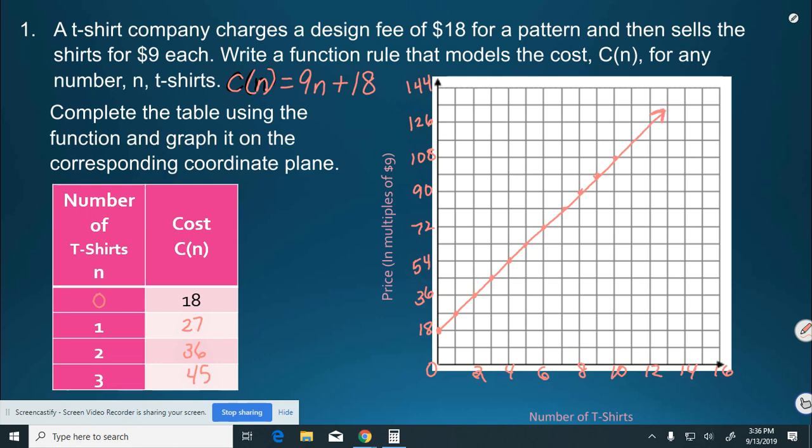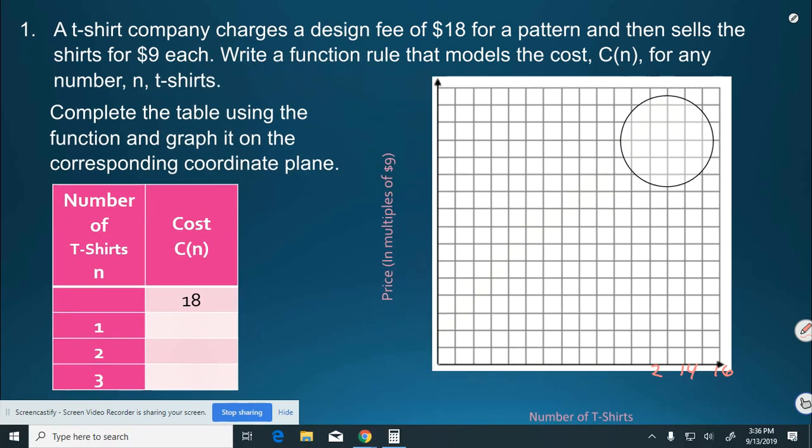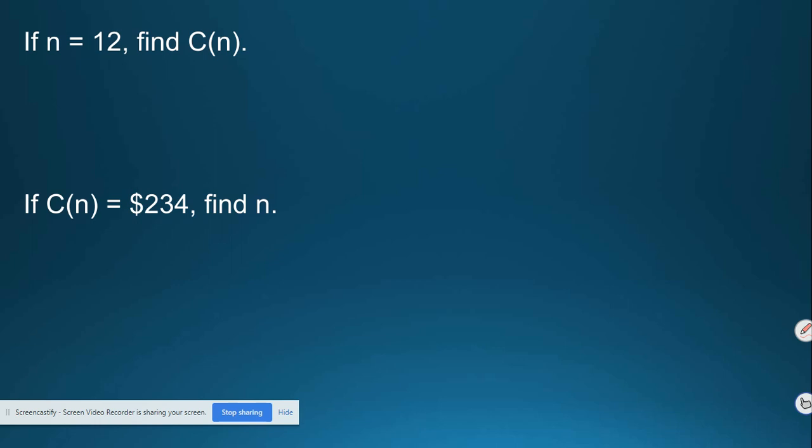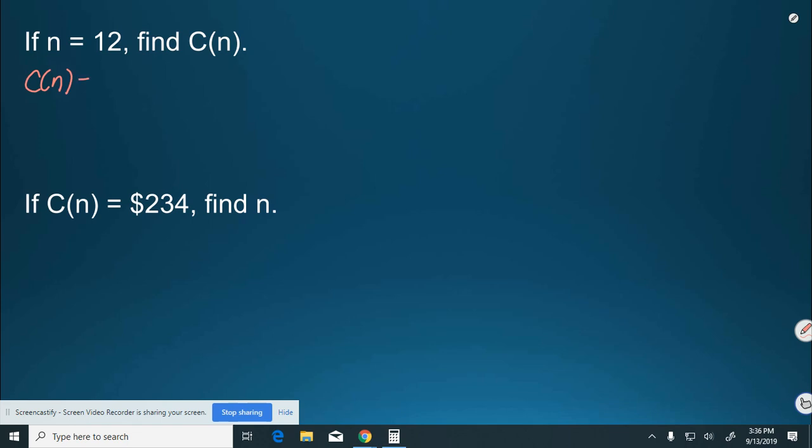The only difference here is that it's not crossing the origin. So, we still have a linear function, but it's no longer proportional. Let's use this function to answer some questions. We have, if n equals 12, find C(n). Again, my equation was C(n) equals 9n plus 18.